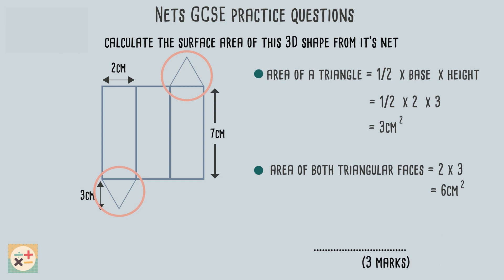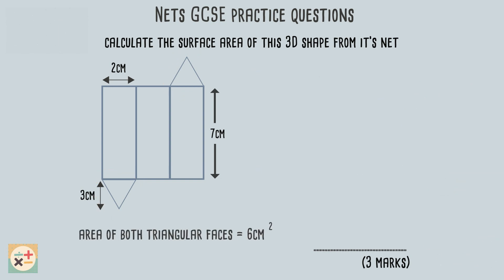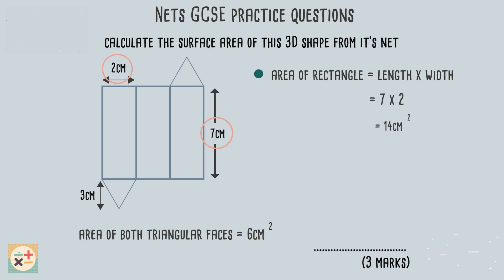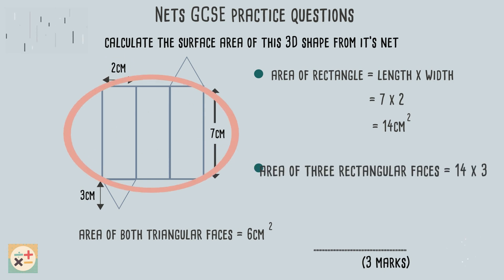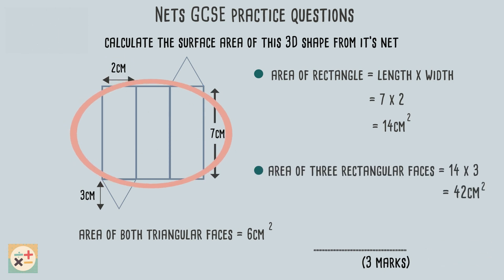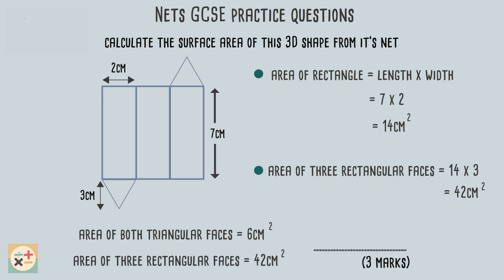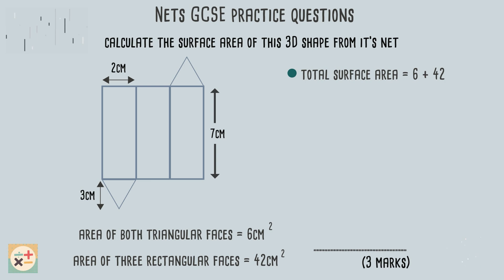Now let's move on to finding the area of the rectangular faces. To find the area of a rectangle, we just need to multiply the length by the width. In this case, we multiply the length of seven centimeters by the width of two centimeters. As there are three rectangular faces, we can multiply our answer by three to find the total area of all three rectangles. Now that we have found the area for the triangular and the rectangular faces, we can add these together to find the total area of the net, which in turn provides us with the surface area of the 3D shape.